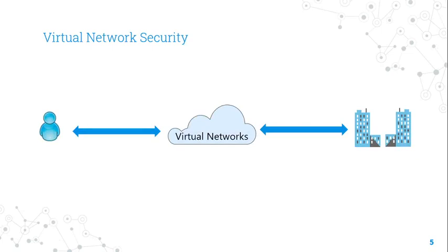Virtual Network Security: Organizations can use virtual networks to connect resources, configure and control the connectivity among Azure resources such as VMs and load balancers. Azure Virtual Networks enable many types of Azure resources such as Azure Virtual Machines to securely communicate with each other, the internet, and on-premises networks. A virtual network is scoped to a single Azure region, which is a set of data centers deployed within a latency-defined perimeter and connected through a dedicated regional low-latency network.